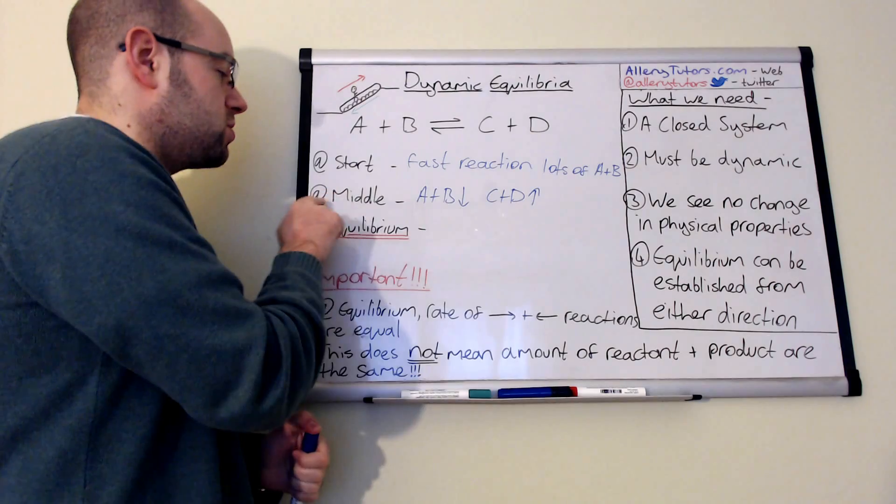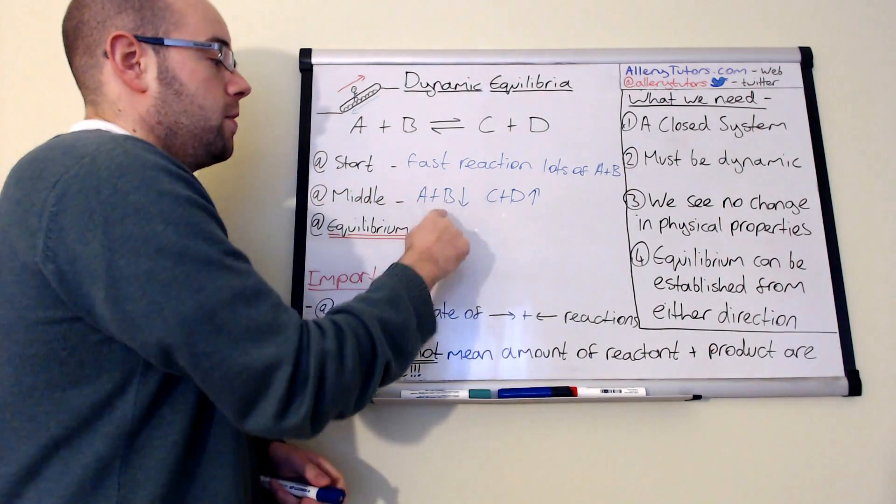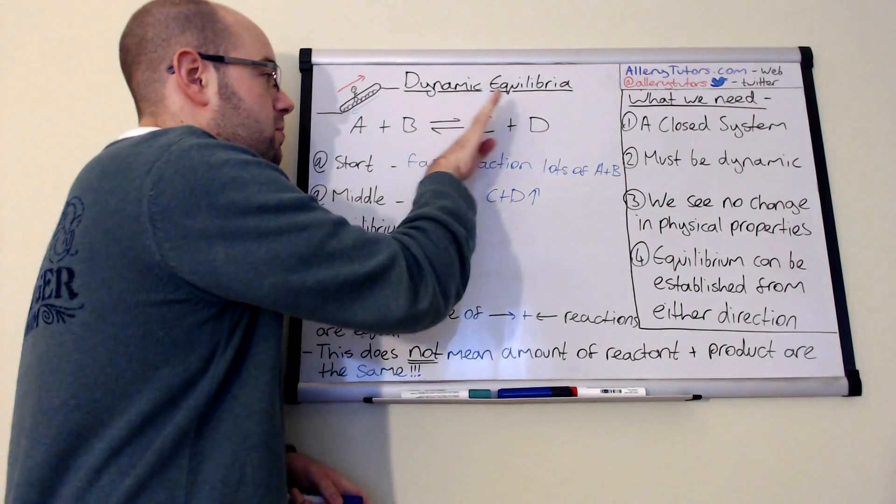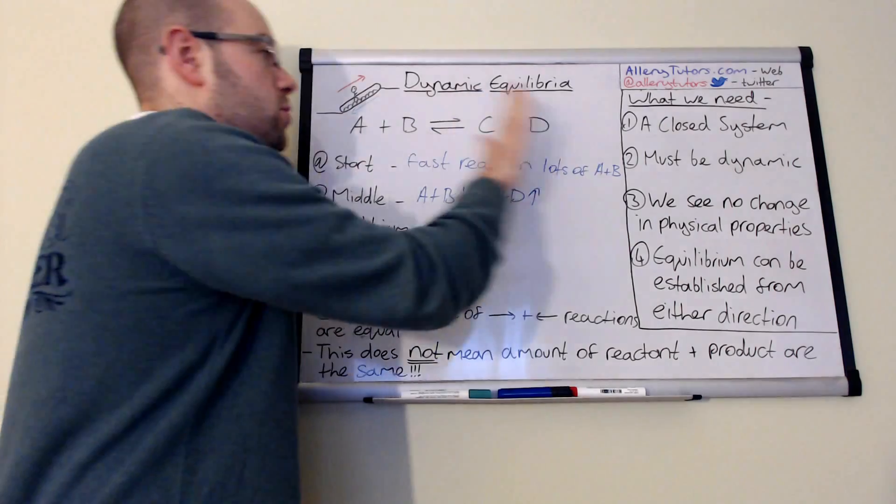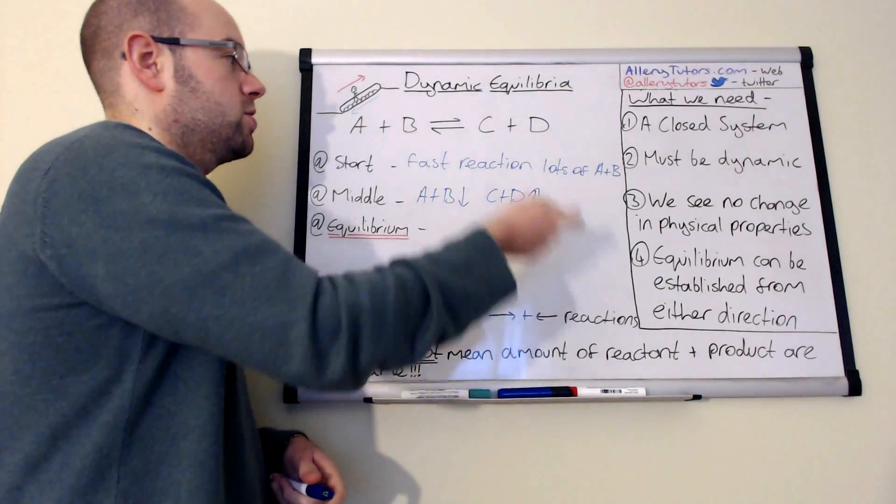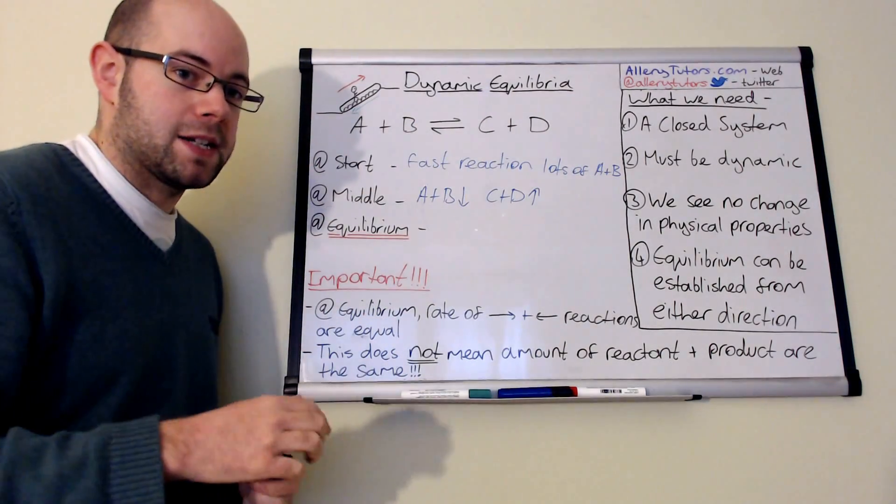But at this stage, we've still got a large amount of A and B. So the equilibrium is still trying to push well over to the right. So we're producing more products than we are reforming reactants.